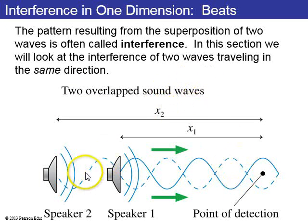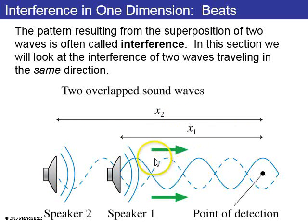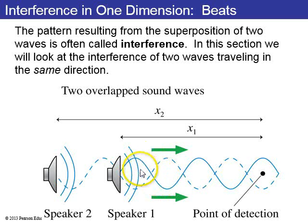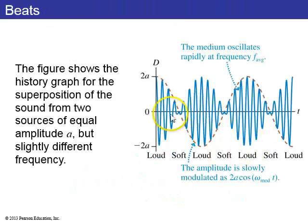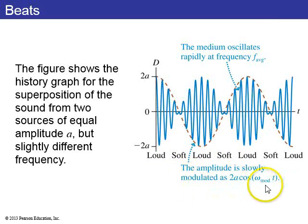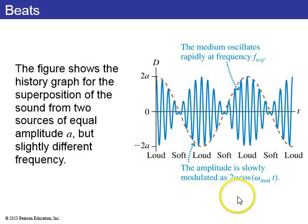Lastly, I want to talk about beats. Going back to the first setup — two traveling waves going in the same direction — up until now we've assumed the frequencies are the same. But for beats, the frequencies are slightly different. What ends up happening is the medium oscillates at some average frequency, but the amplitude is slowly modulated by a modulation frequency, giving you loud, soft, loud, soft variations.